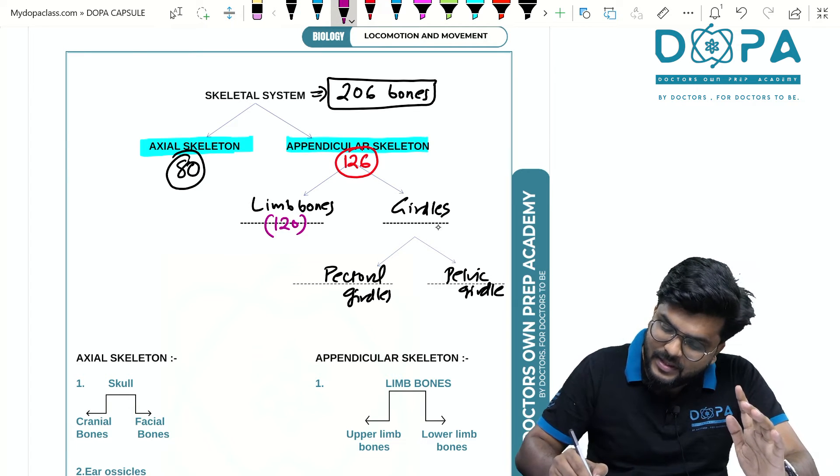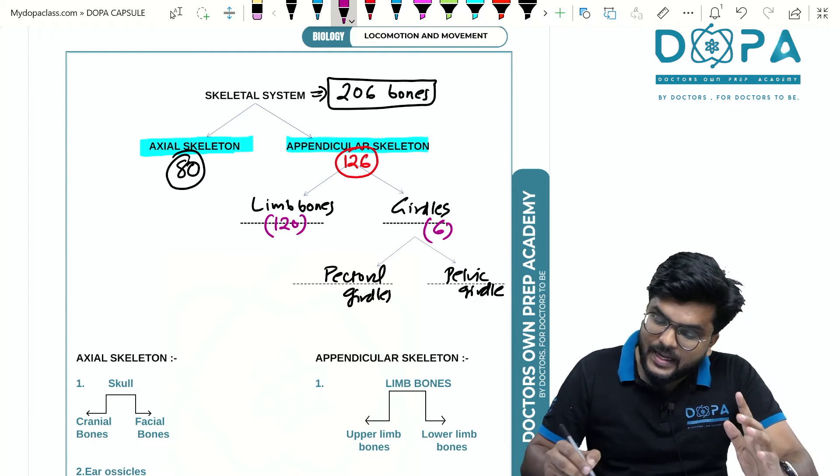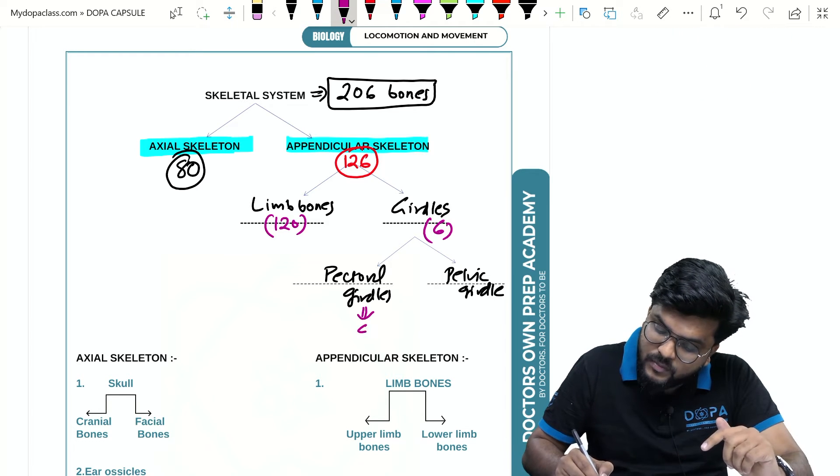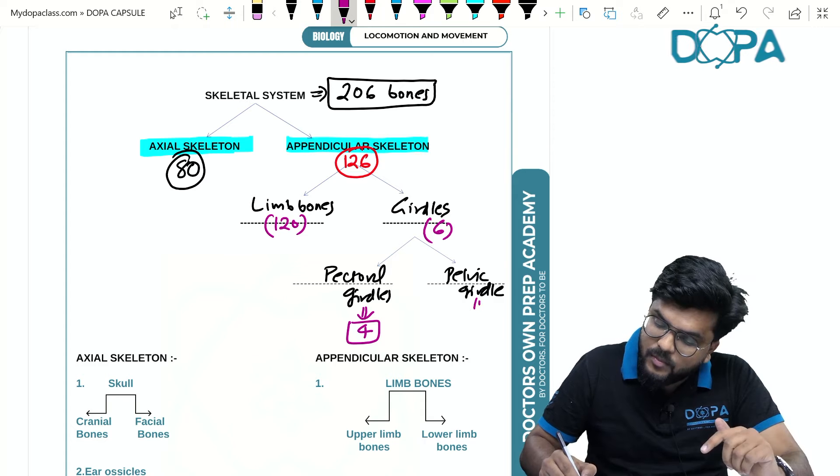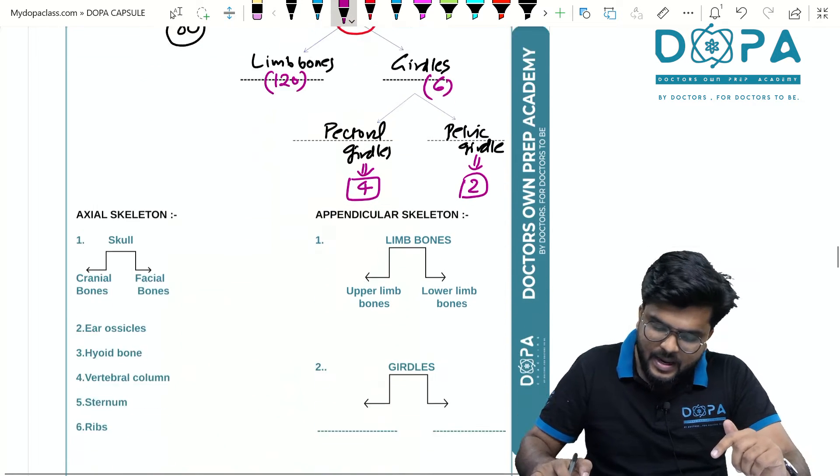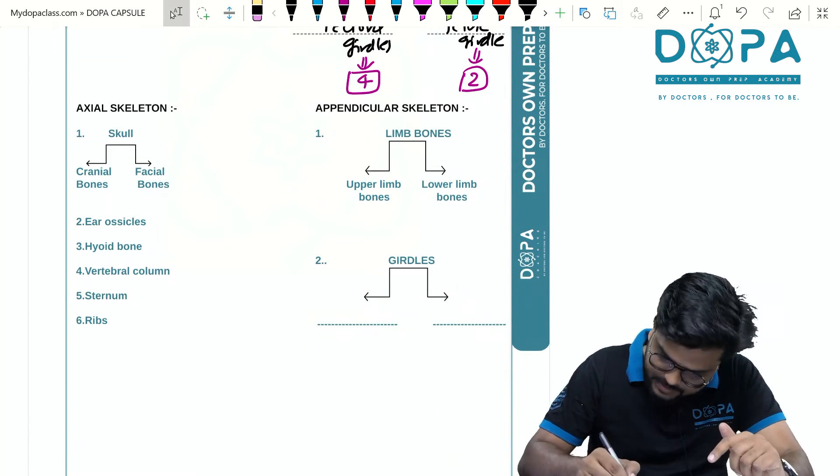The girdle bones numbering is evident here: there will be 6 bones. This 6 girdle bones is actually divided among pectoral girdles where we totally have 4 bones, and pelvic girdle has 2 bones. 4 plus 2 equals 6. In the axial skeleton, as I have already told you, totally we have 80 bones.